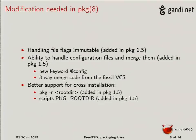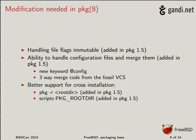When packaging the base system, I discovered that pkg was not good enough to do everything. In the base system, we have a couple of immutable flags set on some binaries — something we don't have in ports at all. So pkg had to handle them: before overwriting a file, it checks if there is an immutable flag, removes it, adds the new file, and then adds the immutable flag back if it is in the new package. That's been added into pkg 1.5.